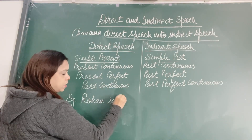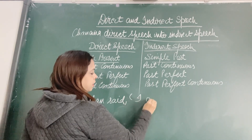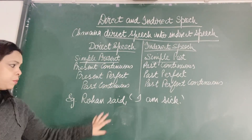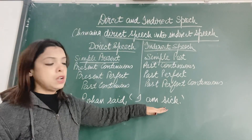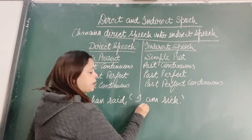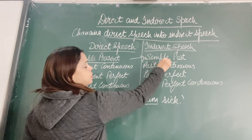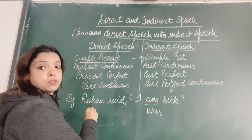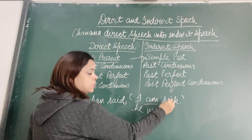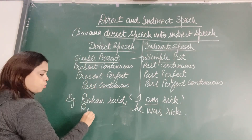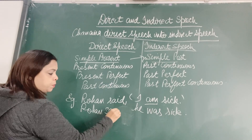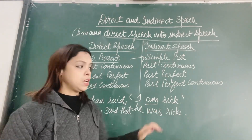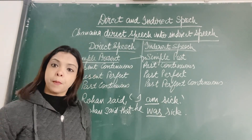For example: Rohan said, 'I am sick.' The reporting verb is in past tense, so we make changes. 'I am' is simple present — simple present changes to simple past. 'I am' becomes 'was.' 'I' becomes 'he' because it is Rohan. So: Rohan said that he was sick. Simple present changed to simple past. Next, present continuous changes to past continuous. For example: He said, 'I am going to tell you.' 'I am going' is present continuous — it changes to past continuous 'was going.' So: he said that he was going to tell you.